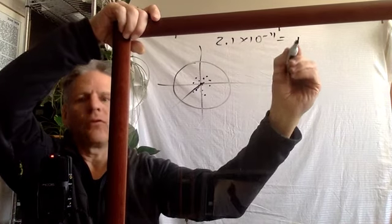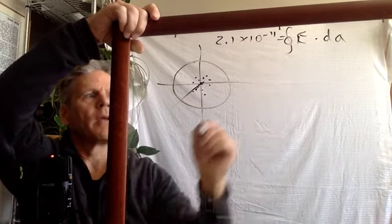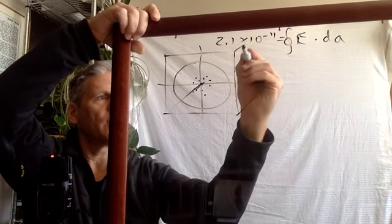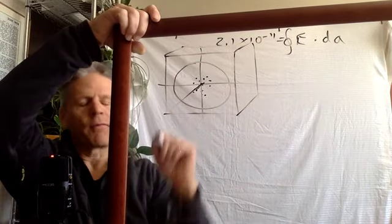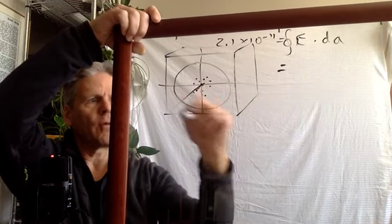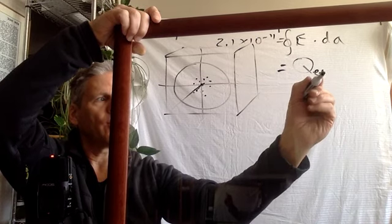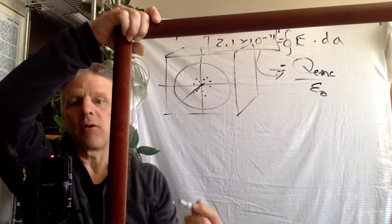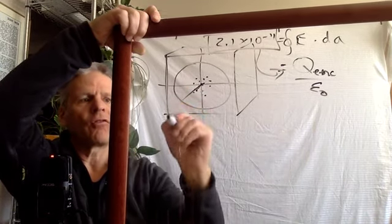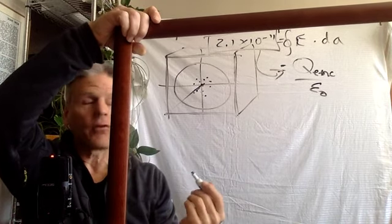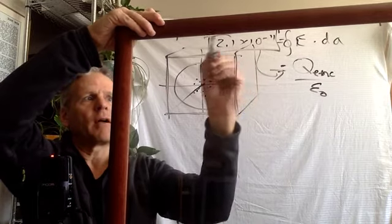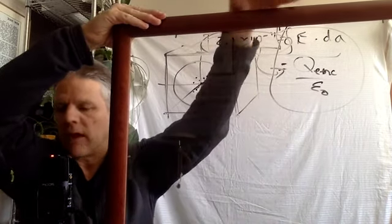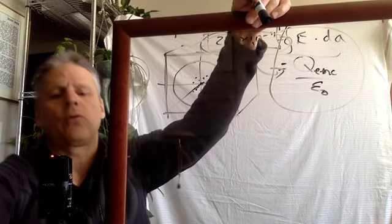We know that the flux equals the integral of E dot DA over the sphere, which by Gauss's law equals Q enclosed over epsilon zero. The question is: does this Q enclosed change when I move to this cube? The answer is it doesn't change, and therefore the flux does not change. So 2.1 times 10 to the minus 11 newton meters squared per Coulomb is the answer.